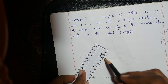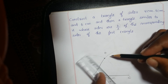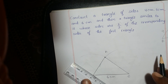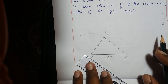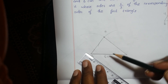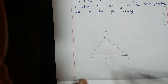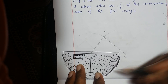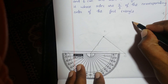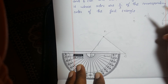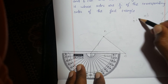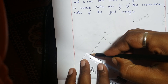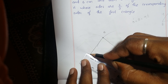Join AB and AC. So this is the required triangle ABC. Now we have to construct a triangle which is similar to the given triangle. Take an acute angle at B with the help of a protractor. I am taking an angle of 30 degrees here. An acute angle is one that is between 0 and 90 degrees. Join both points with the help of a scale.